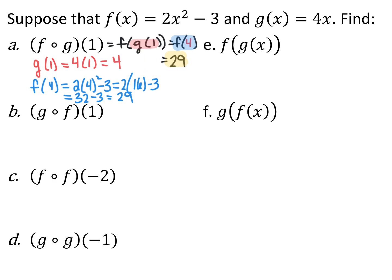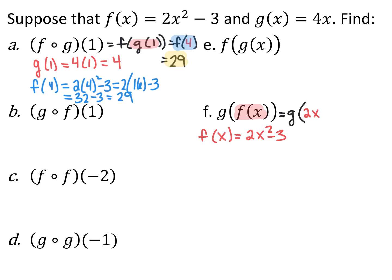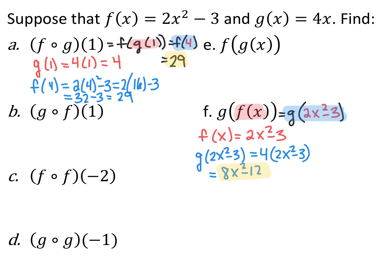We can do something similar with a composite that just has variables, where the final answer also has variables. Looking at g of f of x, the inside is just f of x, which is 2x squared minus 3. Now I evaluate g of 2x squared minus 3 — every time I see an x in g of x, I replace it with the entire thing 2x squared minus 3. So I have 4 times the quantity 2x squared minus 3, and I end up with 8x squared minus 12.